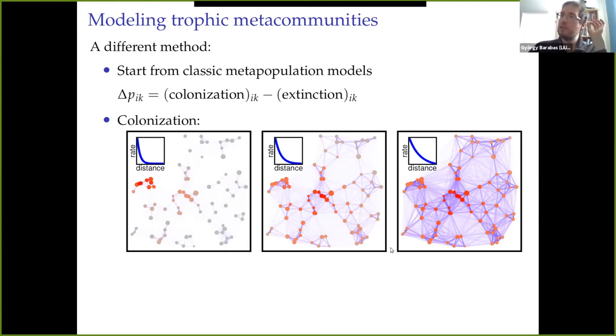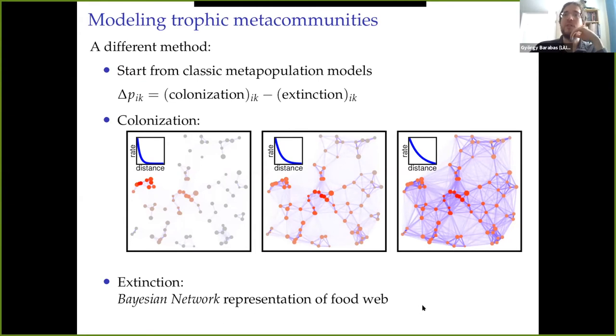That is fine. And I should emphasize that with colonization, our decision is that colonization does not depend on other species in the community. So that is a property of a single species. So far, all we have is independent metapopulation models for many species in the community. How do we couple them? How do we make them an actual community model? And that is what we're going to do through the extinction probabilities. Namely, extinction is going to be modeled through what's called the Bayesian network representation of the food web.